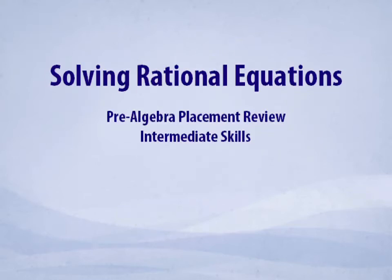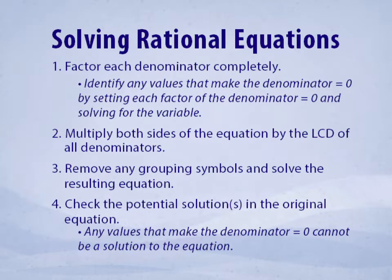Today we'll talk about solving rational equations. When we're solving rational equations, we have to factor each denominator completely. Once we've factored the denominator, we have to identify any values that make the denominator zero by setting each factor of the denominator equal to zero and solving for the variable.